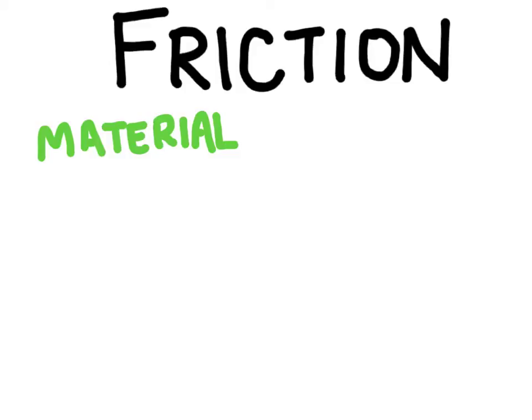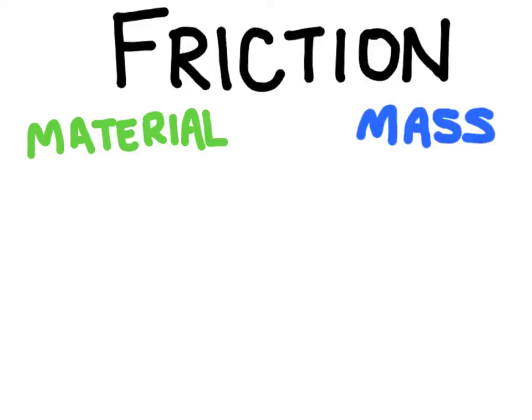The other thing that friction depends on is the degree to which an object is pressed onto the surface — we're talking about the mass of the object. The greater the mass of the object, the more pressed into the surface the object is going to be. This is due to the force of gravity, because the weight of the object is greater if the object has more mass. What we're really concerned with here is the force that the surface is exerting on the object, which is the normal force.